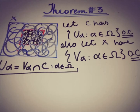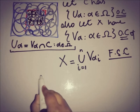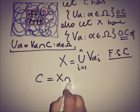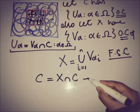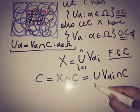Because X is a compact space, there must be a finite subcover and we can represent it by V_alpha_I, where I varies from 1 to N. Because it is a finite subcover, X must be equal to the union of those finitely many open sets. And we know that the intersection of X with C must be C. So C is equal to the intersection of X with the closed set C, and we can also write it as the union of V_alpha_I's intersection with C, where I varies from 1 to N.